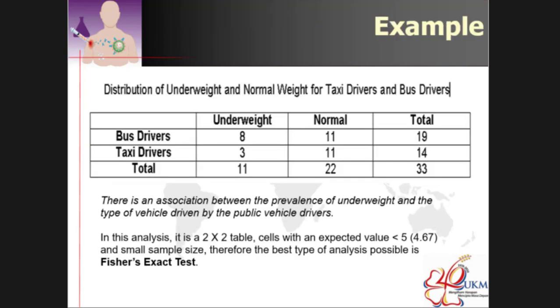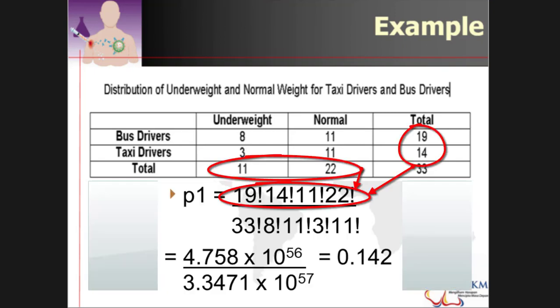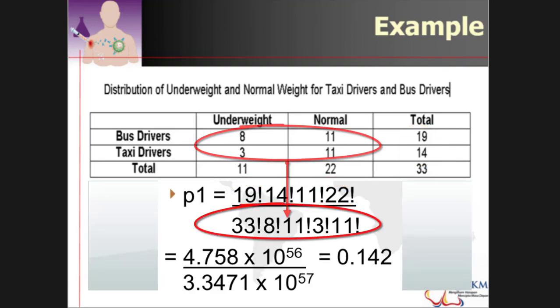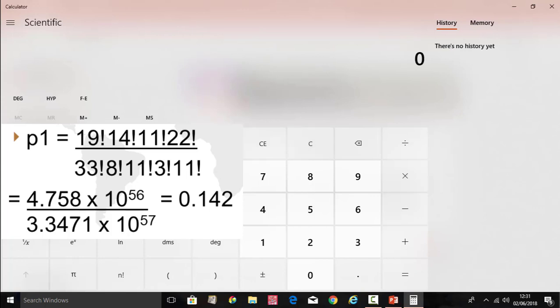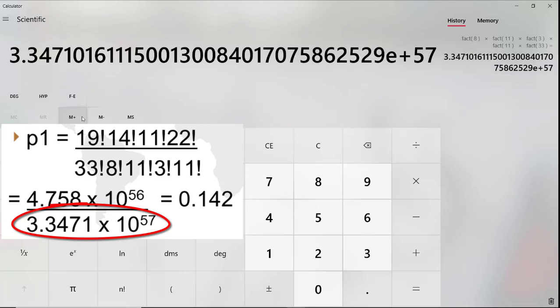Let's take an example, this table. How to remember easy? All those on the outside are at the top, all those on the inside are below. So become 11, 22, 19, 14, divided by 8, 11, 3, 11, and 33. Okay, you start with the 8 factorial, multiply 11 factorial, multiply 3 factorial, multiply 11 factorial, multiply 33 factorial. So this is the answer for the denominator.